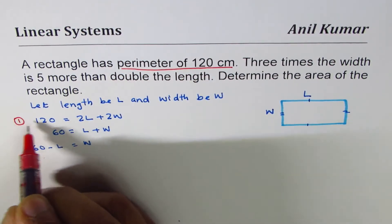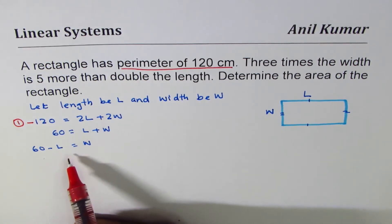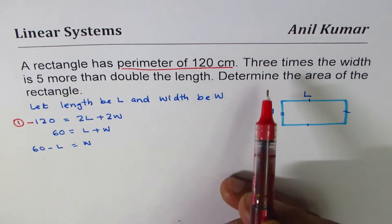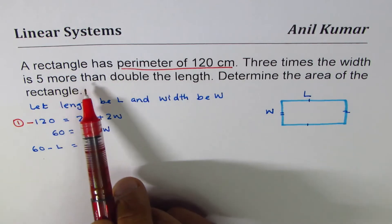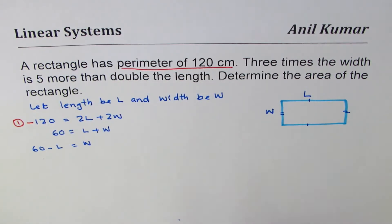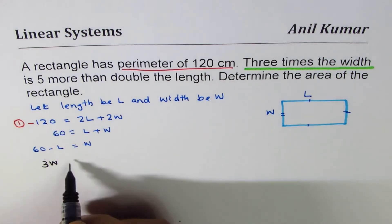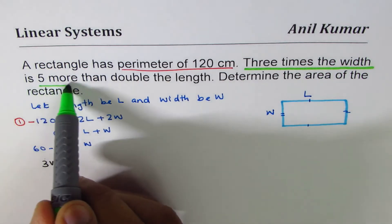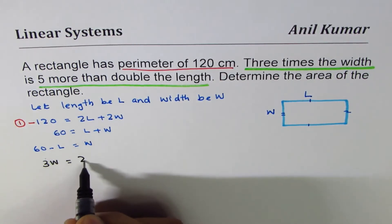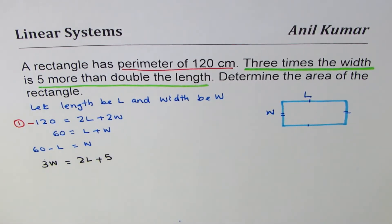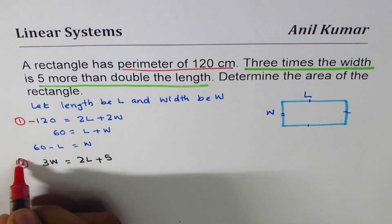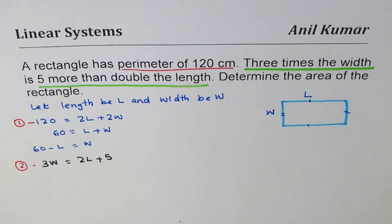Now the second statement: three times the width is five more than double the length. What does that mean? Three times the width, 3W, equals five more than double the length, which is 2L + 5. So we get 3W = 2L + 5. This is how you form the second equation. It's slightly complicated at this stage when you're just beginning to learn linear systems.